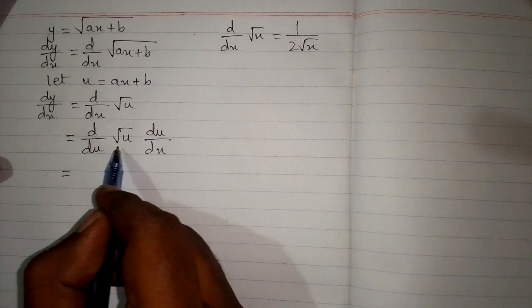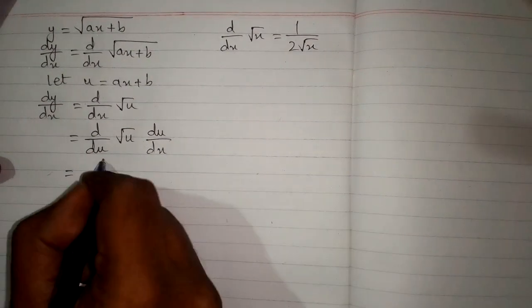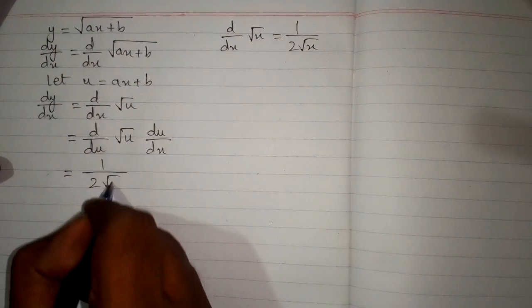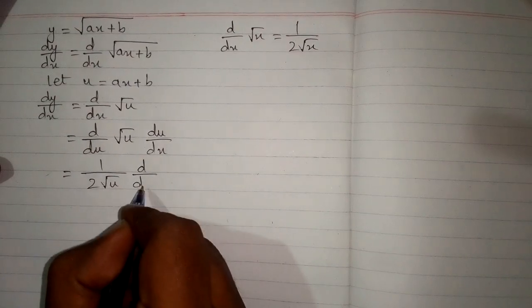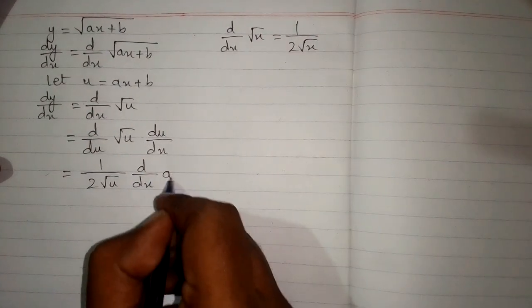Now the derivative of square root of u is 1 upon 2 square root of u multiplied by the derivative of u which is ax plus b.